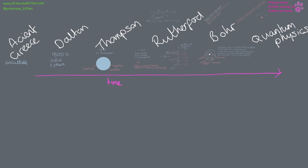The model of atoms changed quite a lot over time. You need to know that Rutherford was responsible for discovering the nucleus and protons, that Chadwick discovered neutrons, and that Bohr developed our current model.